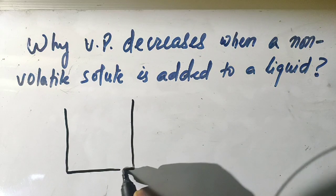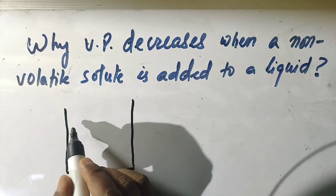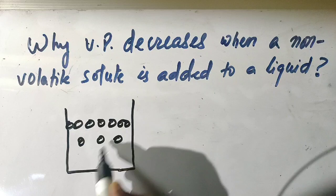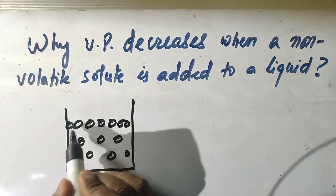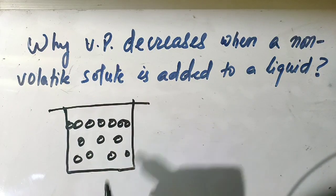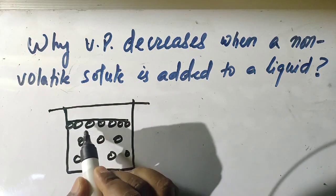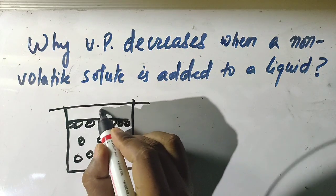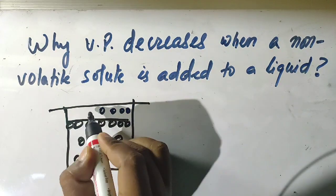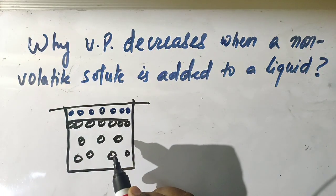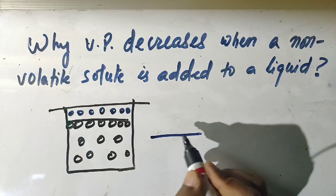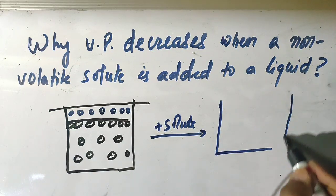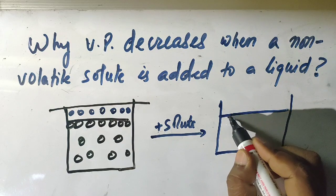Suppose this is a container where a liquid, for example water, is present. Since water is volatile, when it is heated, water molecules go to the vapor state. This creates vapor pressure of the liquid. Now when a non-volatile solute is added, some of the surface area will be occupied by the non-volatile solute.